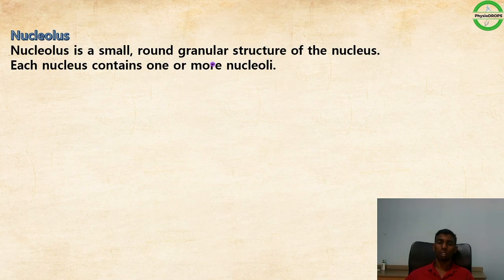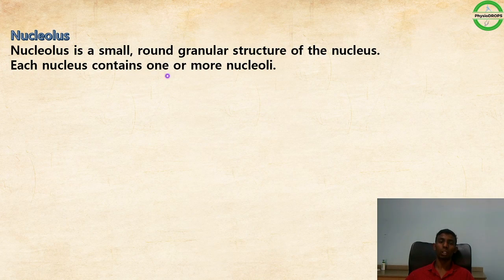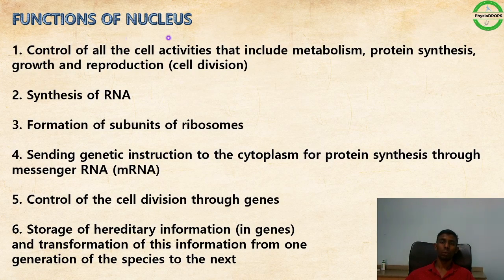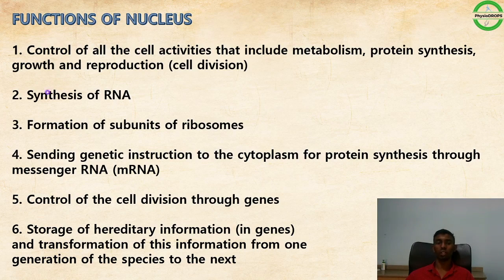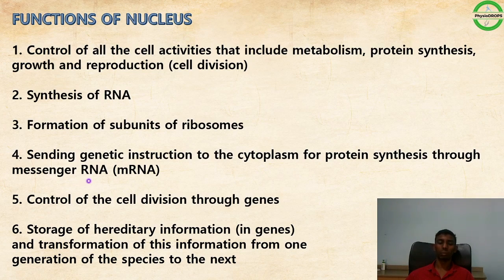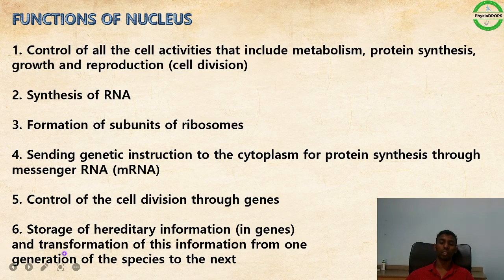The nucleolus is a small, round granular structure inside the nucleus; each nucleus contains one or more nucleoli. The functions of the nucleus include: controlling all cell activities including metabolism, protein synthesis, growth, and reproduction/cell division; synthesis of RNA and formation of ribosome subunits; sending genetic instructions to the cytoplasm for protein synthesis via mRNA; controlling cell division through genes; and storage and transmission of hereditary information from one generation to the next.